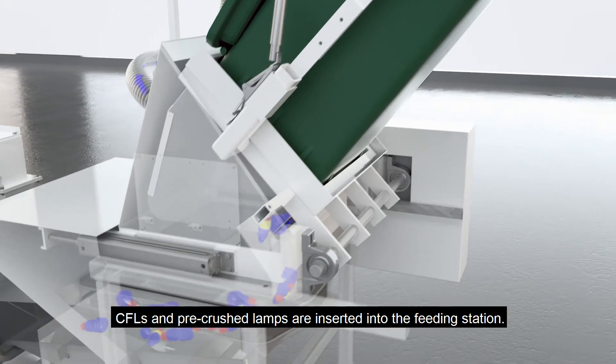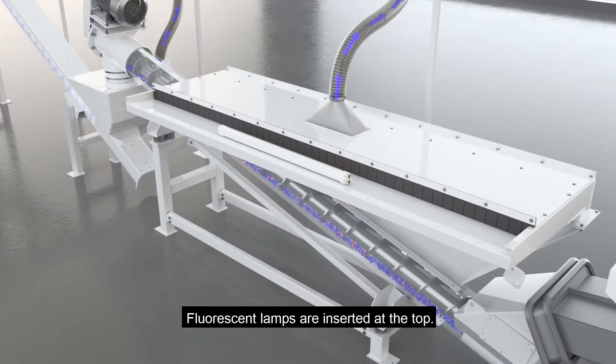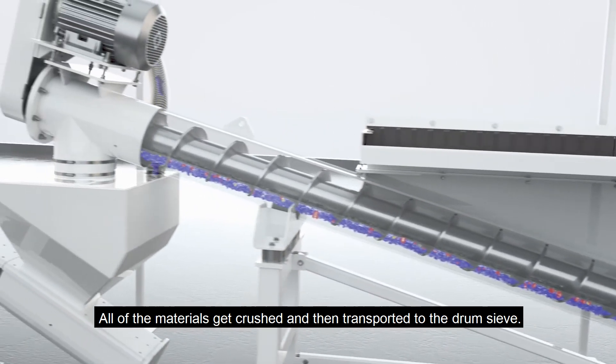CFLs and pre-crushed lamps are inserted into the feeding station. Fluorescent lamps are inserted at the top. All of the materials get crushed and then transported to the drum sieve.